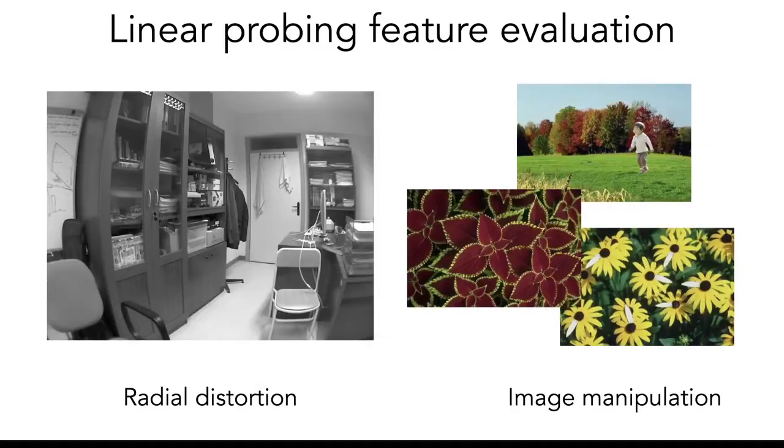Other than the splice localization task, our learned feature can also be used in other tasks that require low-level information or camera understanding. We did linear probing over our learned feature in two tasks, which is radial distortion parameter prediction task, and various types of image manipulation detection tasks.